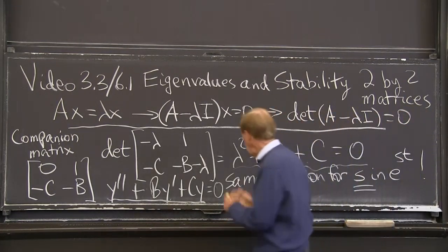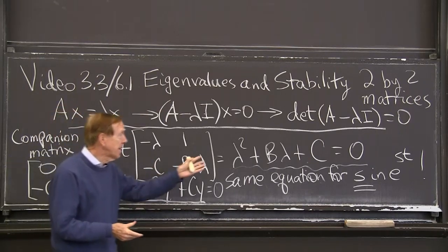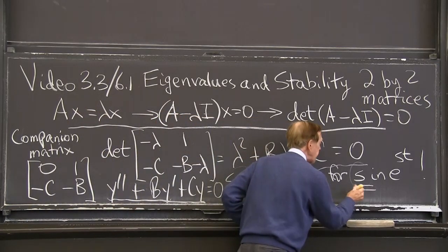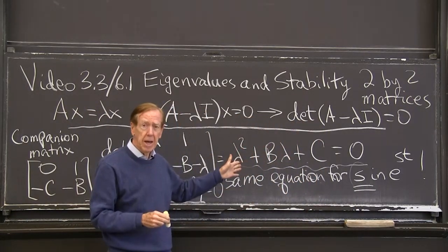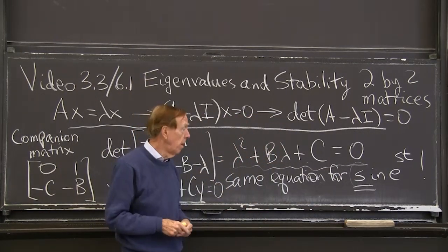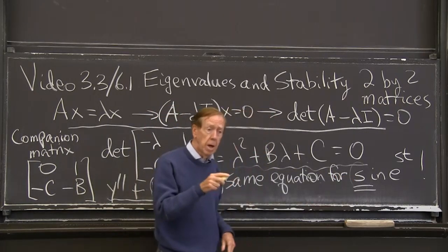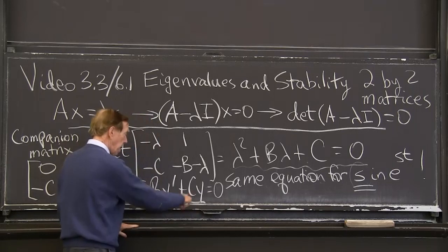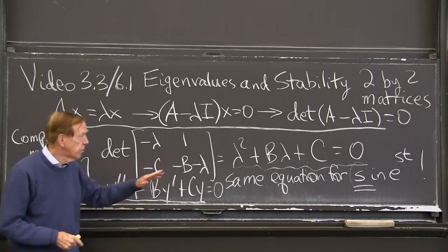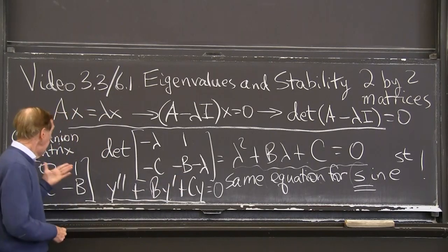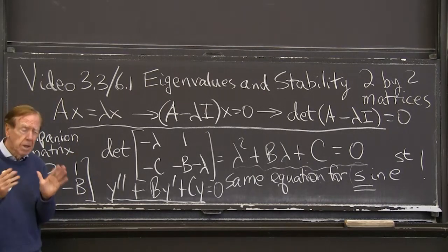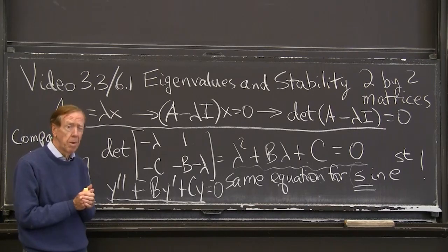That characteristic equation for the companion matrix is exactly the same equation we had for the exponent S in the second-order ODE. So lambda for the matrix case is the same as S1 and S2 for the single second-order equation. The solutions are e^(St), and the matrix has eigenvalues lambda equal to those same S1 and S2.